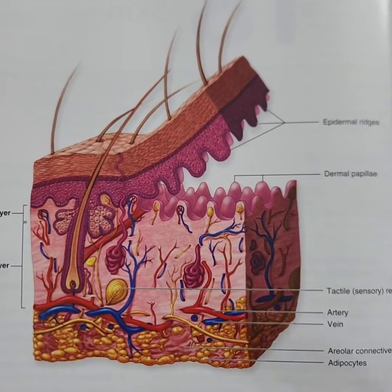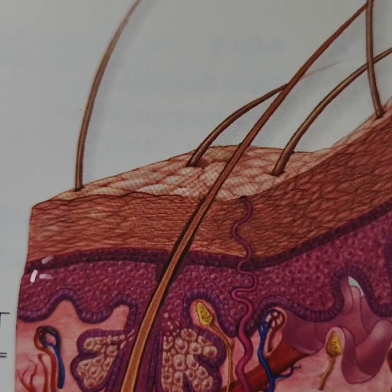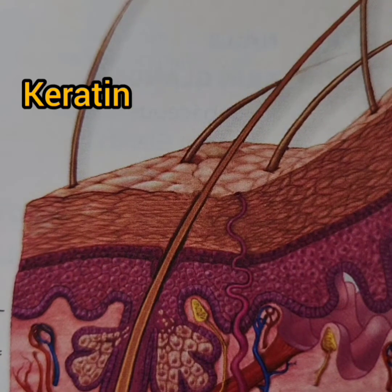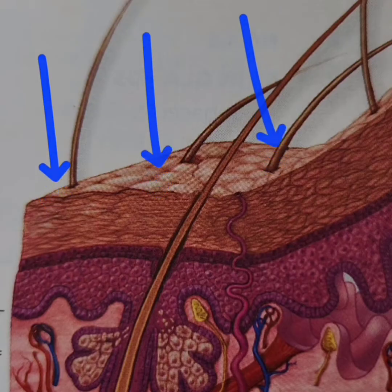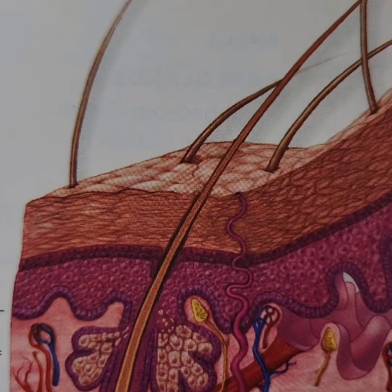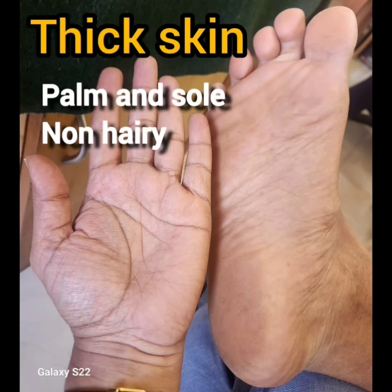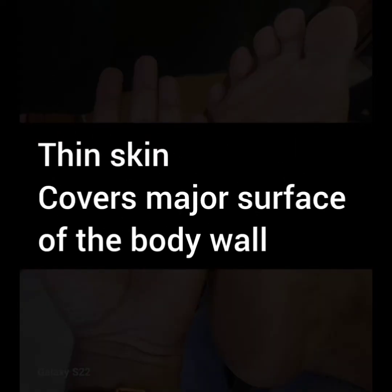The epidermis is a continuously proliferating stratified squamous epithelium which produces a non-living surface layer of protein keratin, which is in direct contact with the external environment and is constantly shedding. We are all covered by a dead husk of keratin, yet the skin is sensitive. Thick skin is limited to the palm and sole — it is non-hairy. Thin skin covers all other surfaces of the body and is hairy.